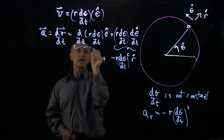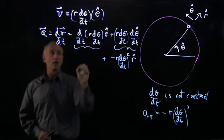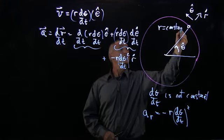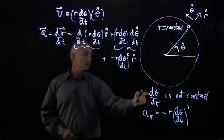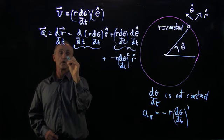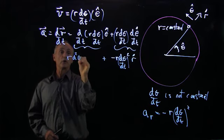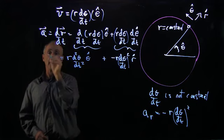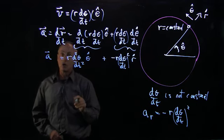But now let's analyze this piece separately. r for our circular motion is a constant. So it's only dθ/dt that is no longer constant. So we simply take a second derivative. And so we get r times d²θ/dt² theta hat. And that is our acceleration.